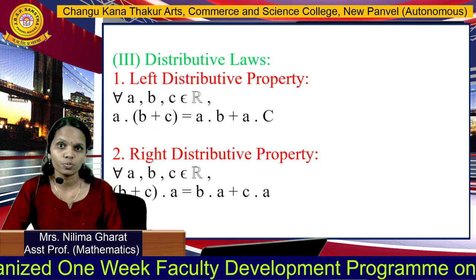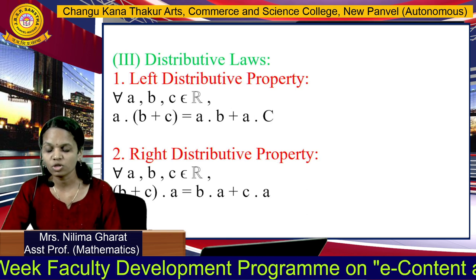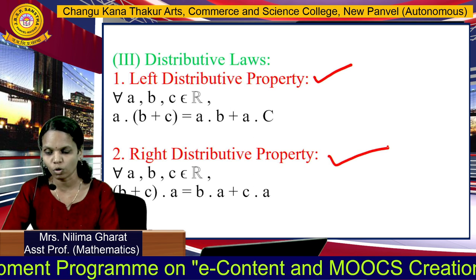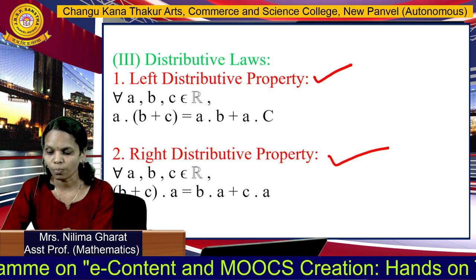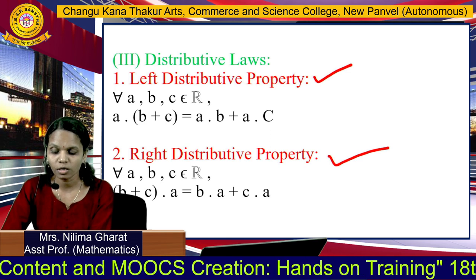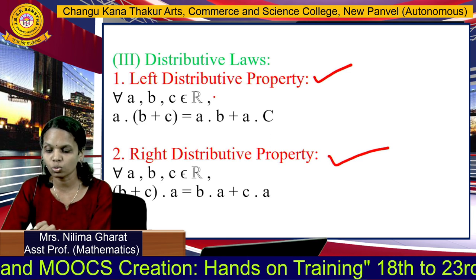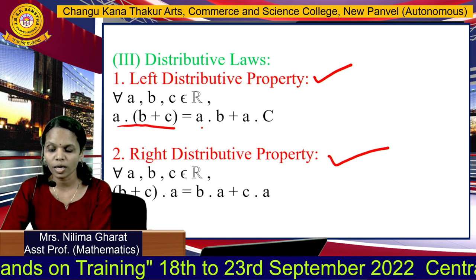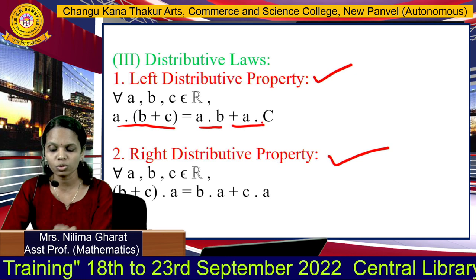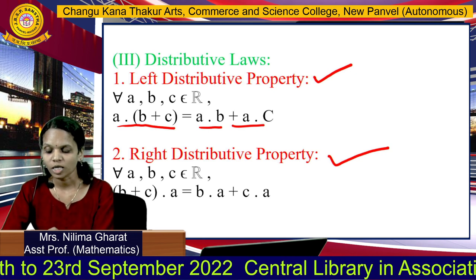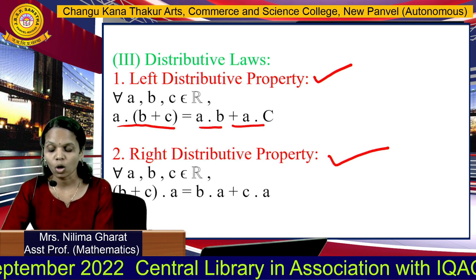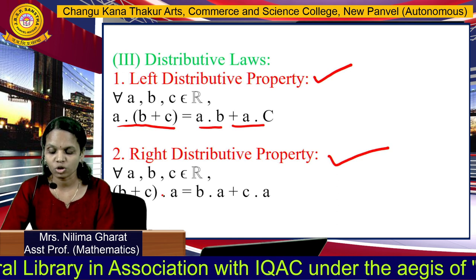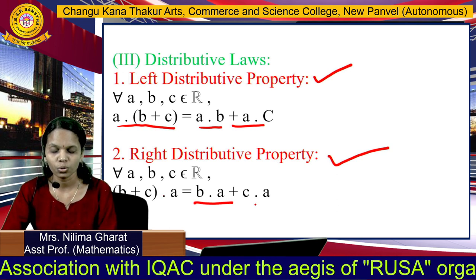Next is the distributive law. There are two distributive laws: the left distributive law and the right distributive law. The left distributive property states that for any three real numbers A, B, C belonging to R, A into (B plus C) equals A into B plus A into C. The right distributive property states that (B plus C) into A equals B into A plus C into A. Thank you.